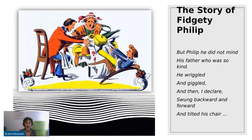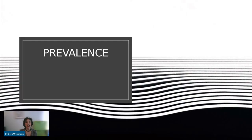Here we have the story of Fidgety Philip. Translated into English: 'But Philip he did not mind his father who was so kind; he wriggled and giggled and then I declared, swung backward and forward and tilted his chair.' As you can see from the image, he actually rips off the tablecloth and everything comes crashing to the floor. This is an example of a child who is hyperactive and impulsive and as a result creates chaos in his home environment.